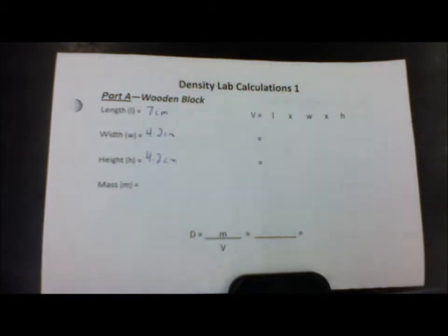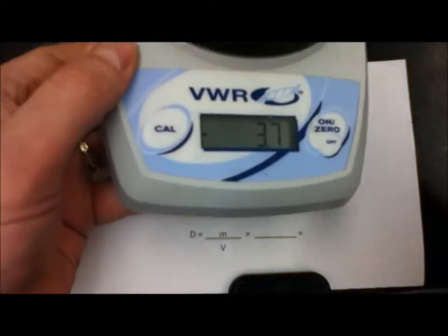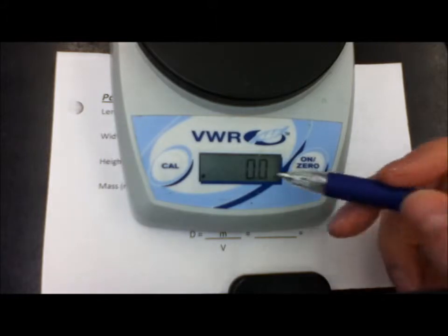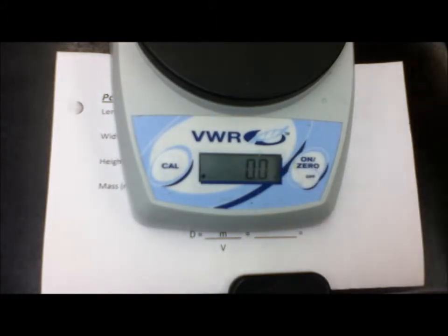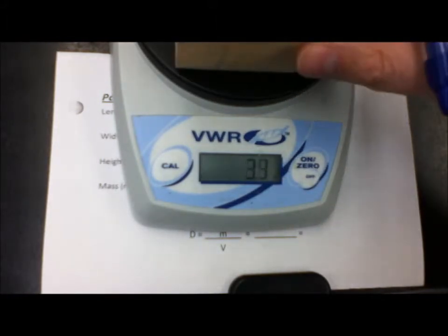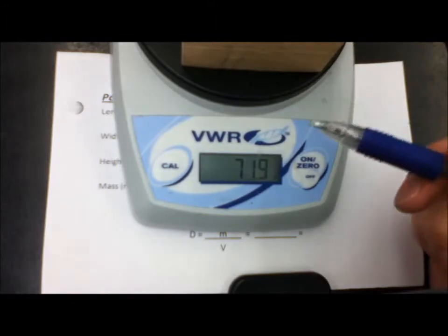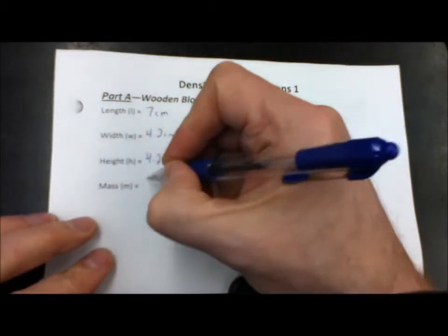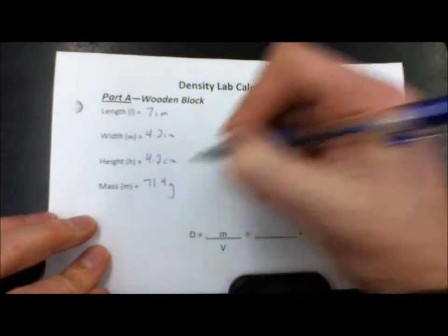So we're going to just put that to the side for a moment and bring in our scale. Our scale is set to zero, so we want to measure the mass of our wooden block. And we notice that it is 71.9 grams. So we want to write that information here, 71.9 grams.